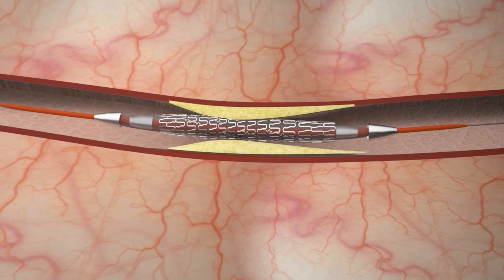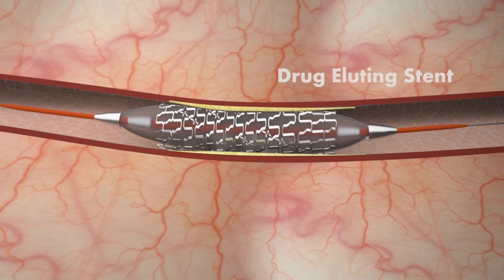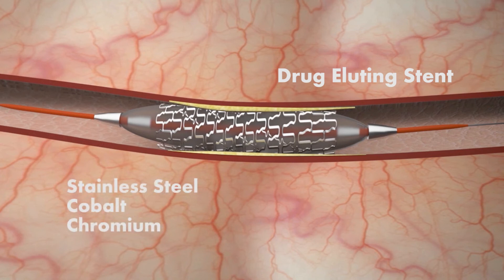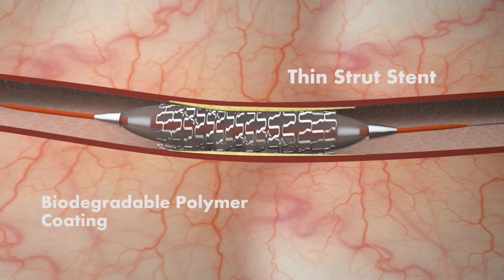The balloon is then inflated, which causes the stent to expand, compressing the fatty plaque blockage against the wall of the artery. A drug-eluting stent is a coronary stent made up of biologically inert material like stainless steel, cobalt chromium, etc. The latest generation drug-eluting stent comes with a thin strut stent and biodegradable polymer coating.